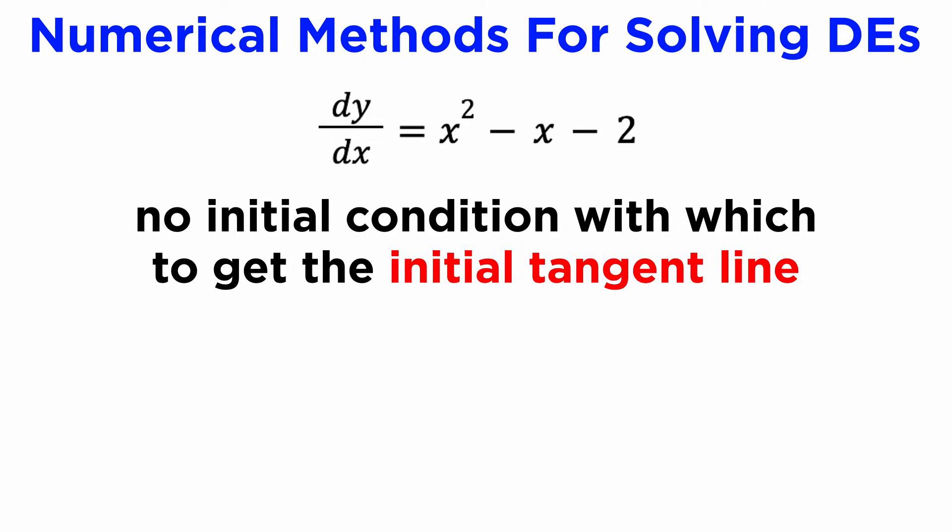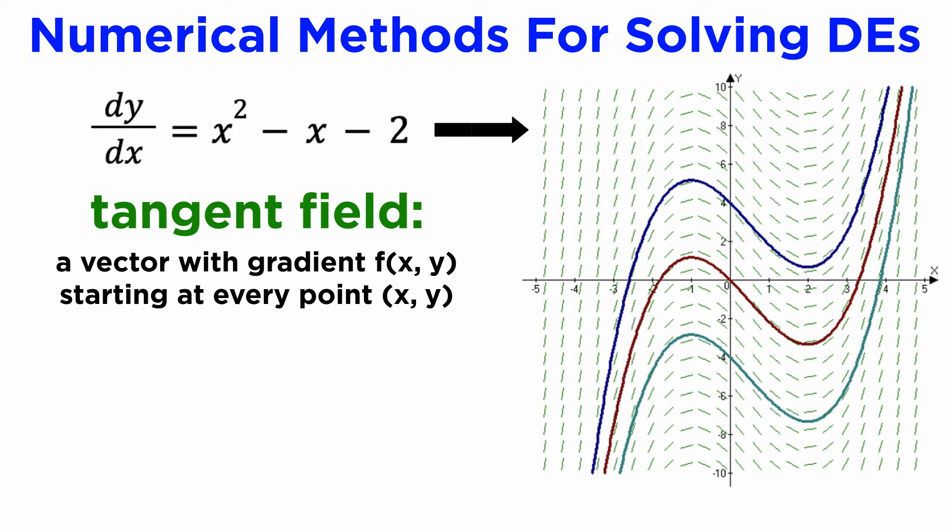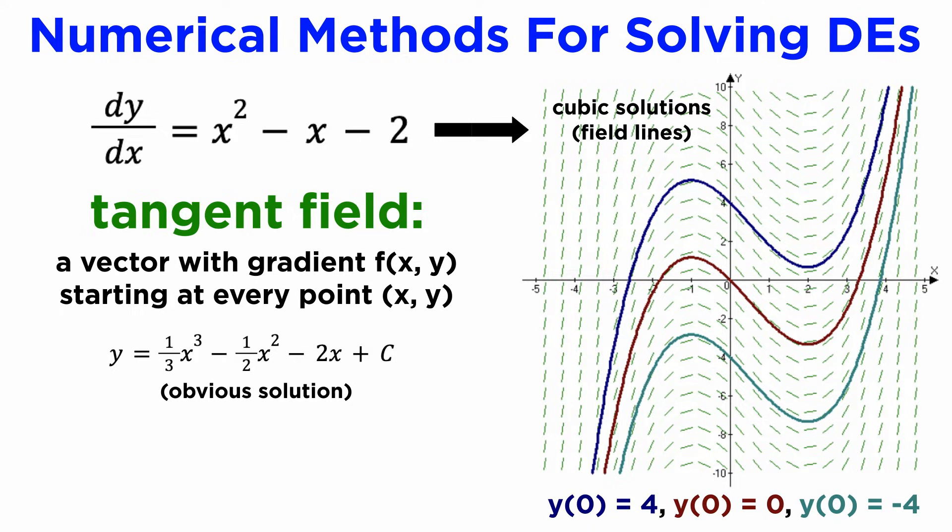If we were given an initial condition for some point (x,y), we could plug it into f(x,y) to draw our initial tangent line, but since we don't have one, we need to sub in points all across the xy plane. For each point, we can draw the tiny tangent lines with the appropriate gradient, which will populate the tangent field, shown as the collection of green line segments on this graph. We can consider this a vector field, and the solutions to our DE are the field lines of this tangent vector field, shown by the colored curves on the graph. Each possible curve represents the solution with a different initial condition, so this is a way to visualize the family of curves making up the general solution.